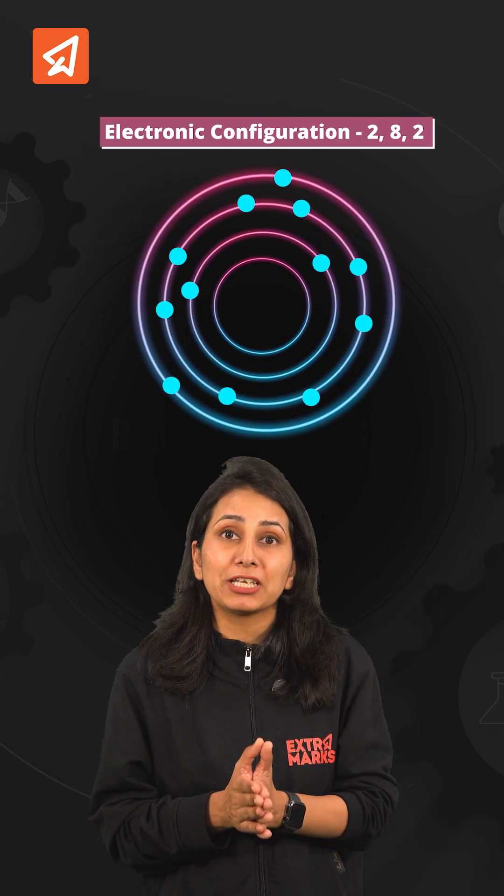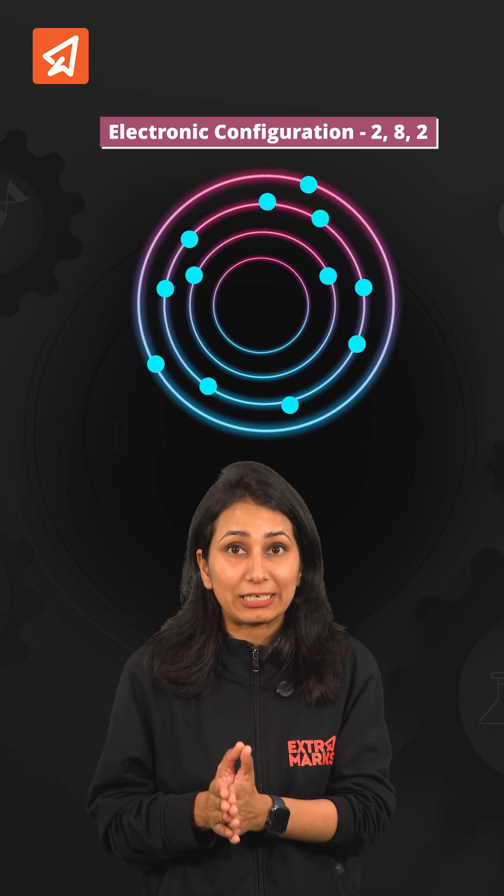In the third atom, there are 12 protons and the electronic configuration is 2,8,2. It will lose two electrons to form a cation.